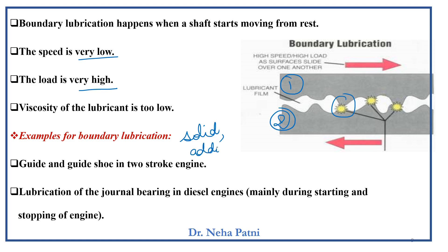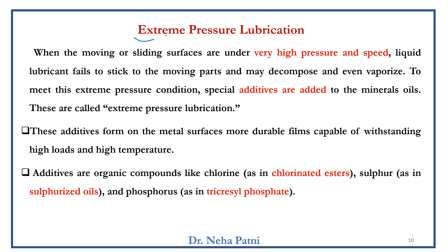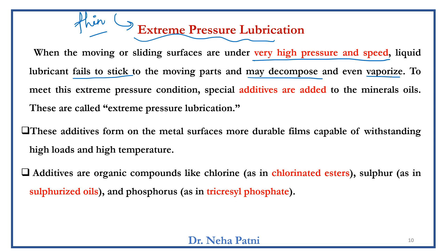In boundary lubrication, solid lubricants are generally used, along with certain additives — blended oils or synthetic oils are used specifically to cope with low speed and high load conditions. The third mechanism — extreme pressure lubrication — is essentially where not only is thin film not maintained, but the liquid lubricant is also unable to work. This is because the pressure is very, very high, and the lubricant may decompose or vaporize, failing to serve its purpose. Neither thin nor thick film conditions can be maintained.